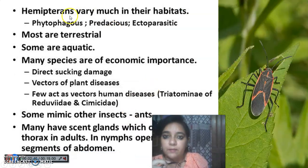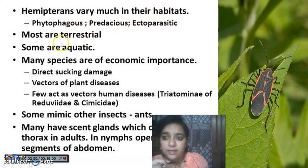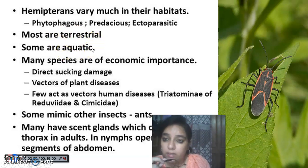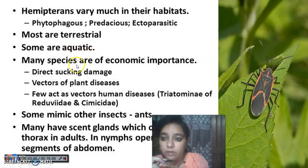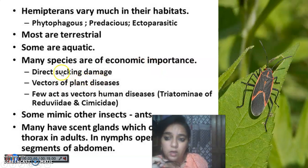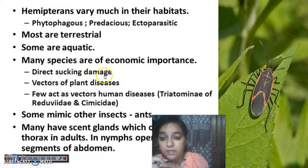Hemiptera vary in their habitats — they can be phytophagous (eating plants), predators, or ectoparasites. They can be terrestrial or aquatic. An aquatic water bug with the V-shaped structure was shared earlier. Many species are of economic importance because they damage foliage by sucking sap from leaves, which can damage entire crops. They are also vectors of various plant diseases.